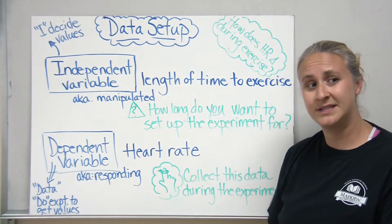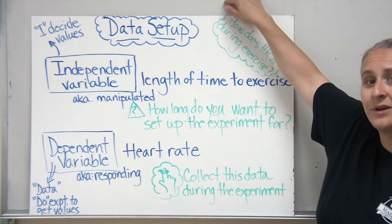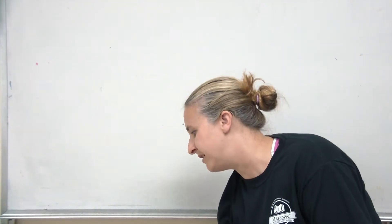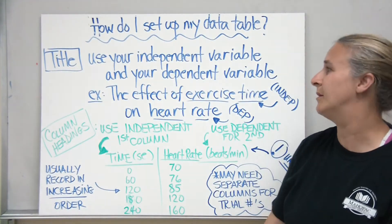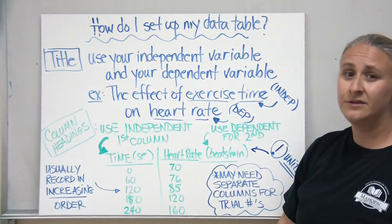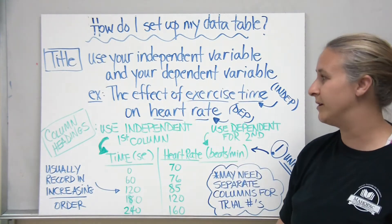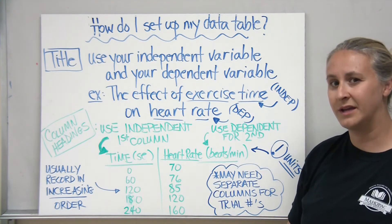So as we fill out our data table, this is the one that's going to be blank. So this is going to be the data we're going to collect during our experiment. So once we know our independent and our dependent variables, we then need to come up with how we're going to set up our data table. You need a title, which in this case you can use your independent variable and your dependent variable. For example, the effect of exercise time on heart rate.